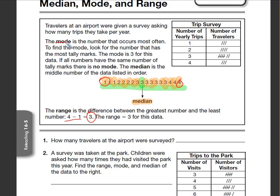Okay, the mode is the number that's most often. So if we look at this, we have 1, 2, 3, 4, 4 2s. We have 1, 2, 3, 4, 5, 6, 7 3s.